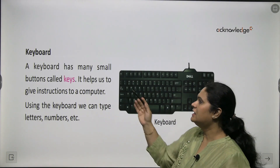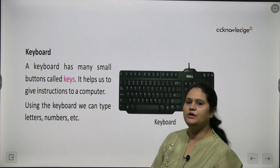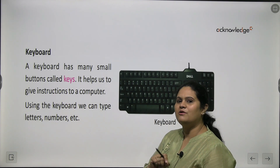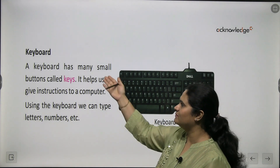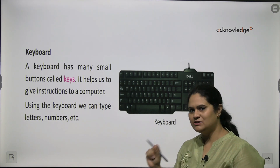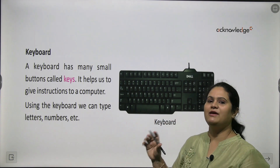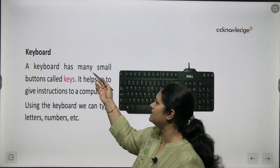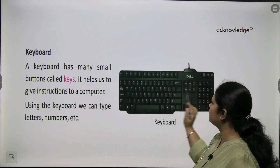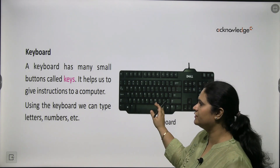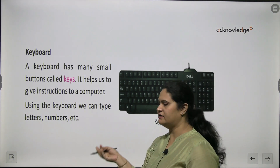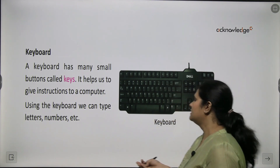Next we have a keyboard. Just like children, you use your pencil to write in your notebook — you must have something to write on the computer, and for that we use a keyboard. A keyboard is used to write on the computer, and when you write on the computer, it is called typing. A keyboard has many small buttons called keys. It helps us to give instructions to a computer. Using the keyboard, you can write letters, numbers, and so many other things.